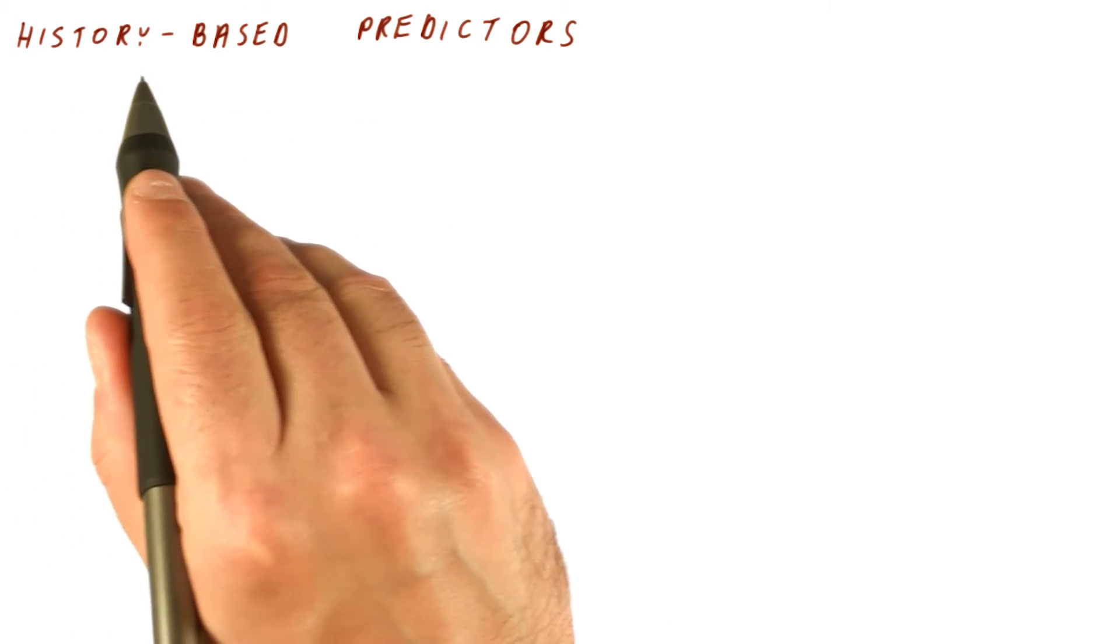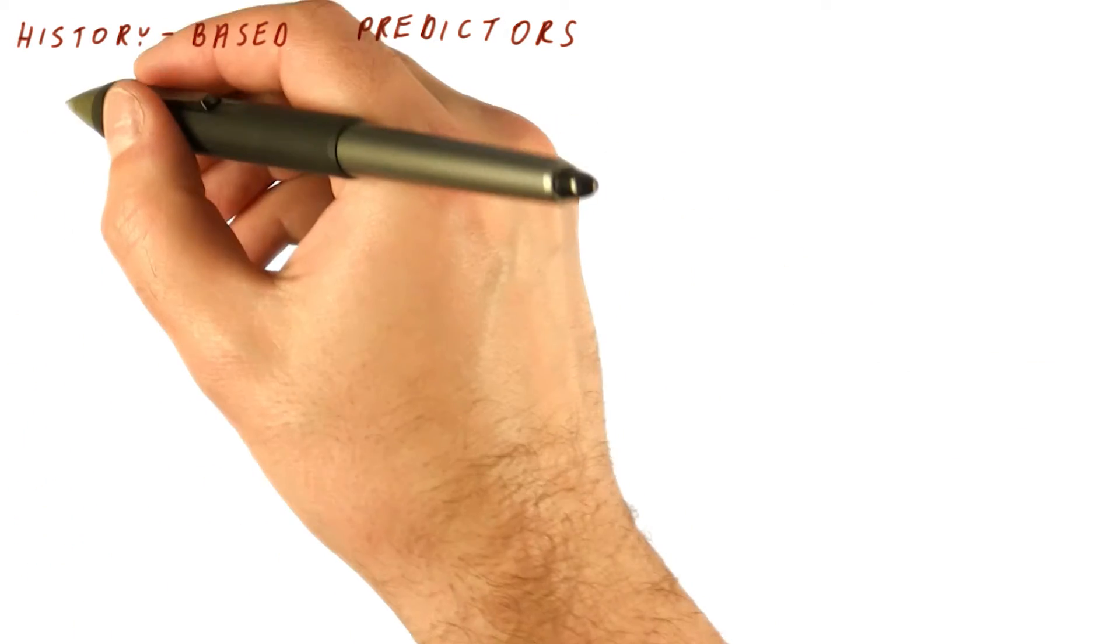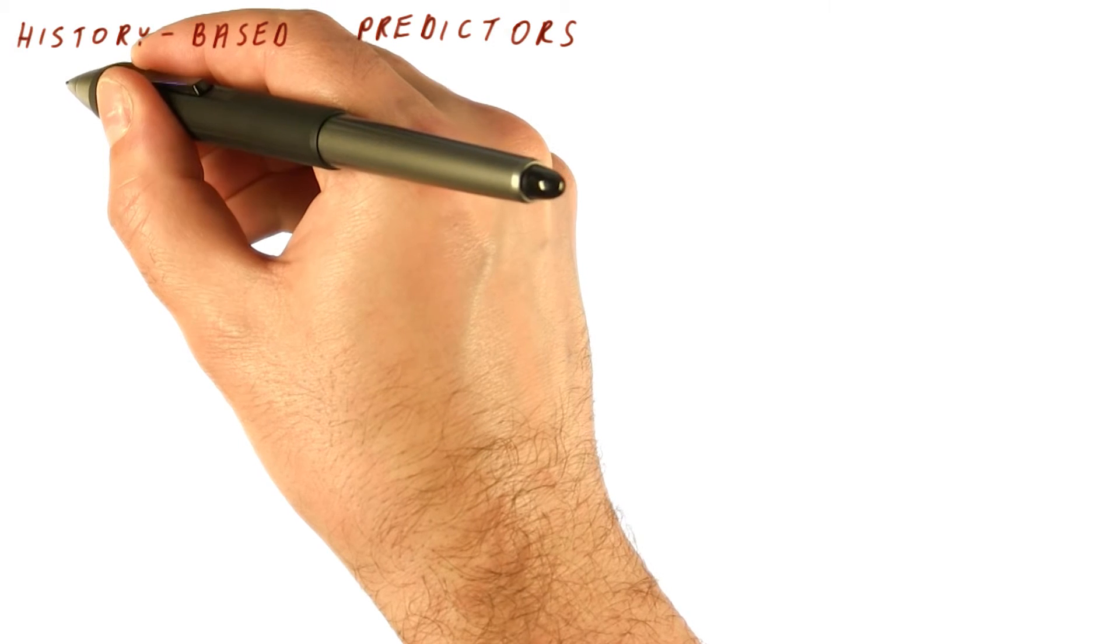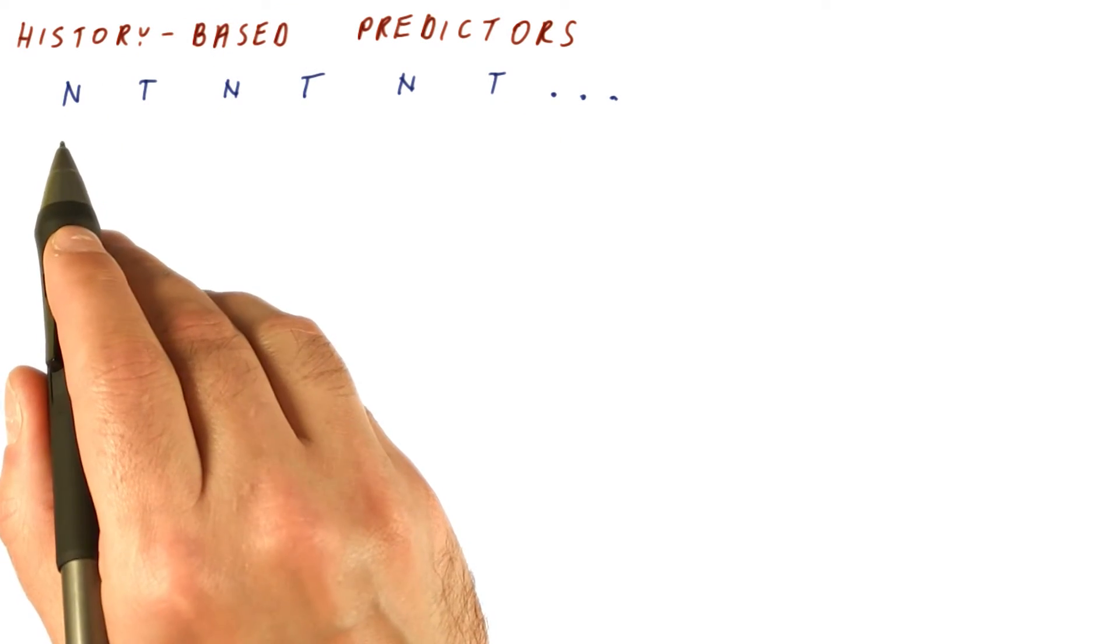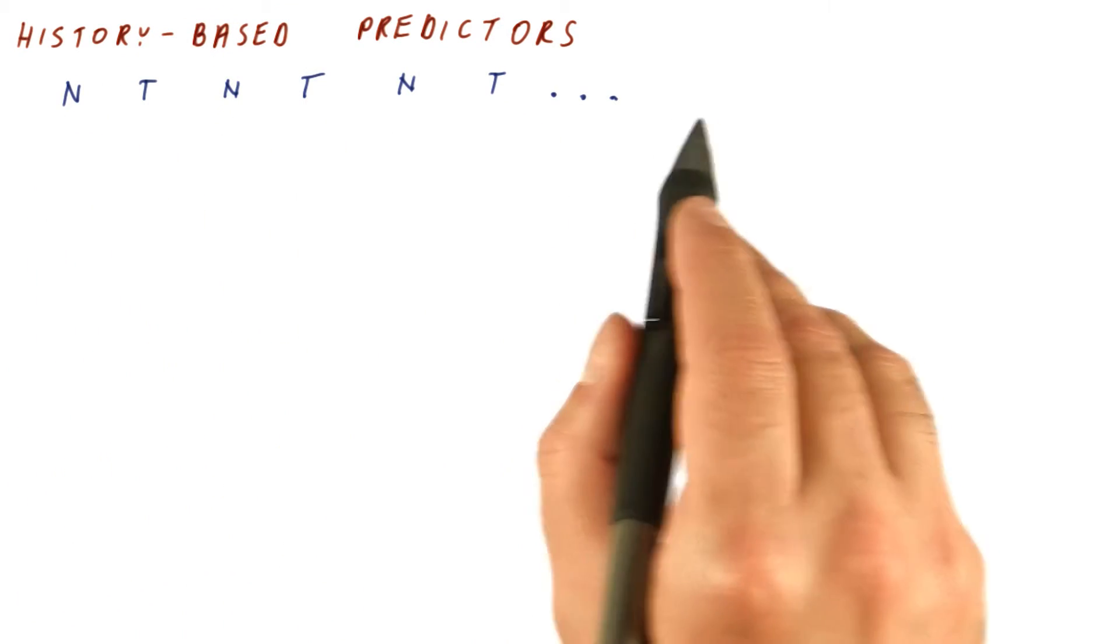So now we will look at so-called history-based predictors, which are trying to do well on things like when we have a not taken, taken, not taken, taken repeating pattern.